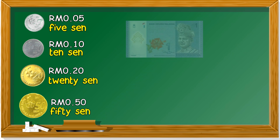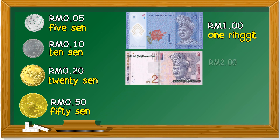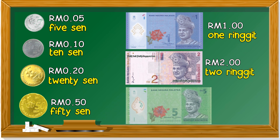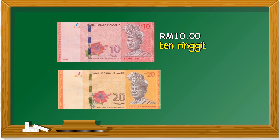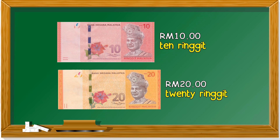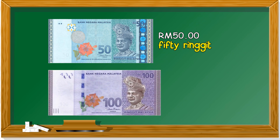Now we look at the notes. 1 ringgit. 2 ringgit. 5 ringgit. Remember all the colors. The red note, 10 ringgit. The orange note, 20 ringgit. This one, the dark green notes, 50 ringgit. This is 100 ringgit.